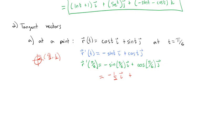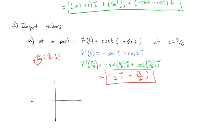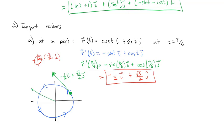At t = π/6, r'(π/6) = −sin(π/6)·i + cos(π/6)·j = −(1/2)i + (√3/2)j. This vector can be positioned so it's tangent to the curve at time t = π/6. Visually, from parametric equations, x = cos t and y = sin t traces the unit circle counterclockwise. The tangent vector at t = π/6, written in component form as −(1/2)i + (√3/2)j, points in the same direction regardless of where it's placed, because vectors don't have a location — they just have direction and magnitude.